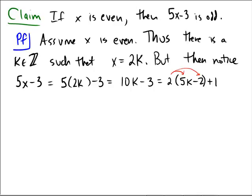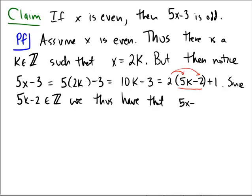So that way I have it as 2 times something plus 1. Since 5k minus 2 is an integer, we thus have that 5x minus 3 must be odd. Because it is 2 times an integer plus 1. And this concludes our proof. Thank you.